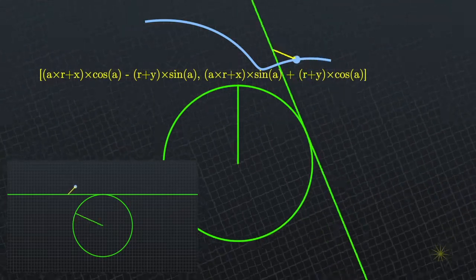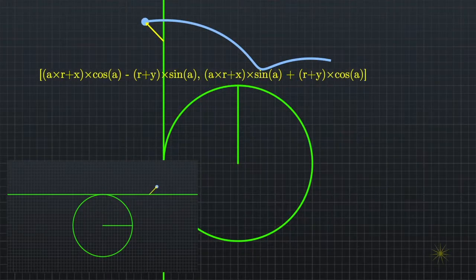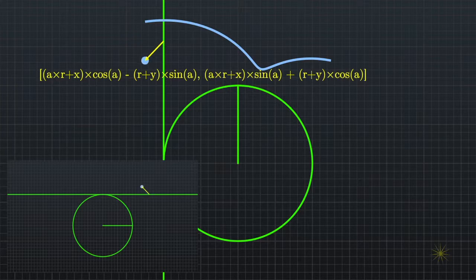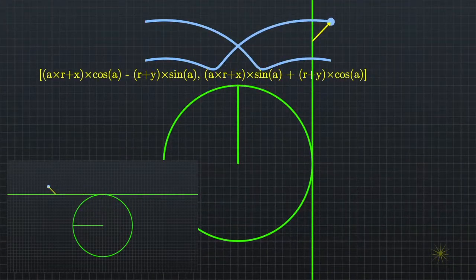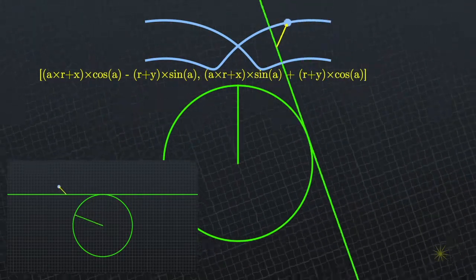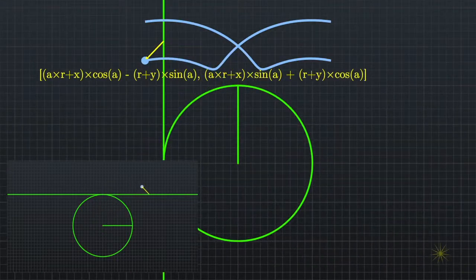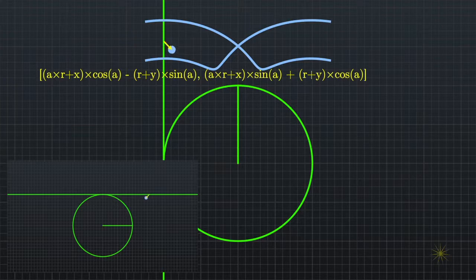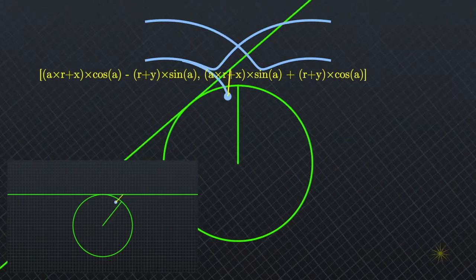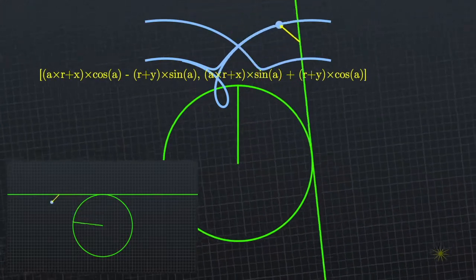For points outside of our circle, they make these beautiful swooping shapes. For points inside the circle, they cut these interesting loops.